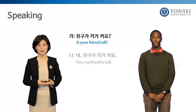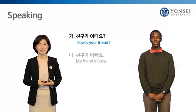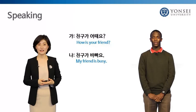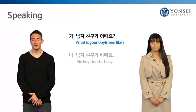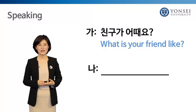친구가 키가 커요? 네, 친구가 키가 커요. 친구가 어때요? 친구가 바빠요. Excellent. Now ask your friend a question and let them answer. 여자친구가 어때요? 여자친구가 예뻐요. 남자친구가 어때요? 남자친구가 바빠요. Well done.